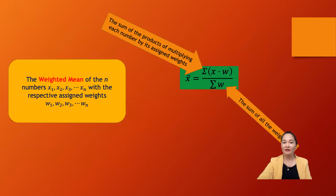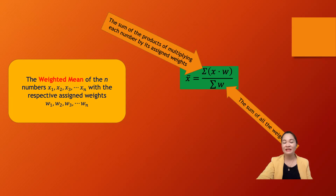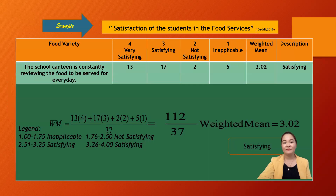Next we have the weighted mean, another type of measure of central tendency. The difference between the mean and the weighted mean is that in the weighted mean, there is a corresponding weight for every data point. The formula is: x-bar equals the summation of (x times its corresponding weight) divided by the summation of all the weights — that is, the sum of the products divided by the sum of all weights.